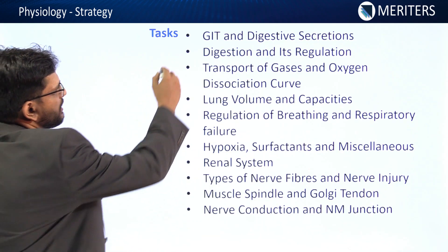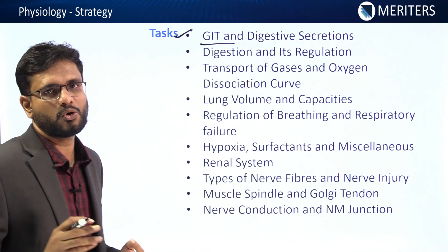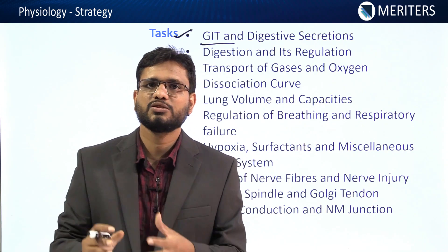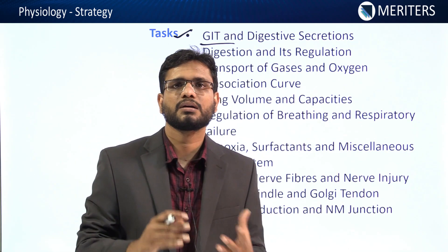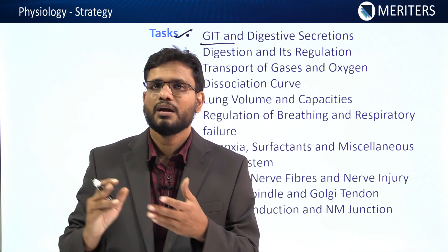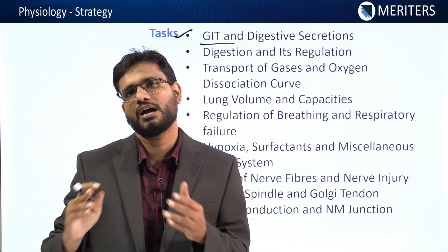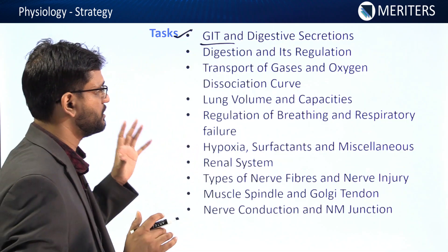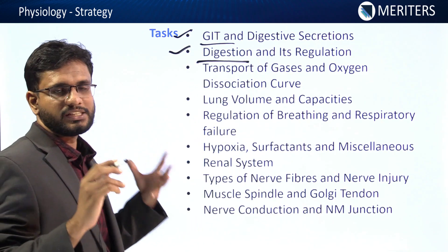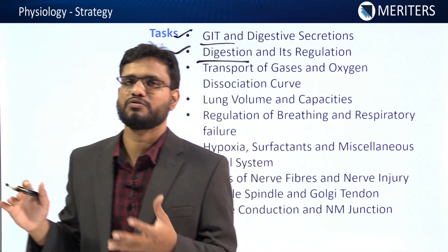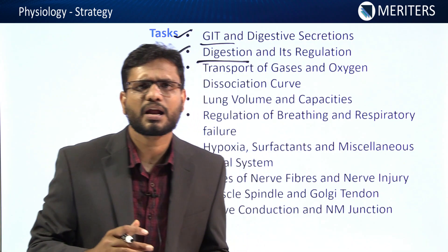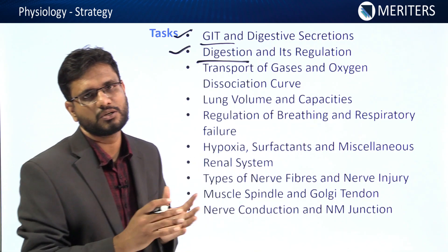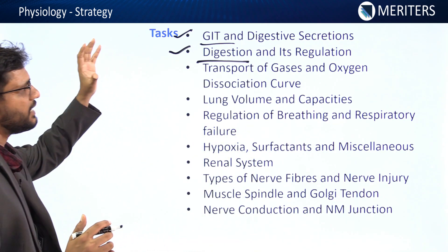The first task is GIT and digestive secretion. You should know about the different organs and parts of the GIT — oral cavity, esophagus, stomach, intestine, and important organs like pancreas and liver, their secretions, and how those secretions lead to digestion of food. You should also know digestion: where protein digestion occurs, where starch digestion starts, where lipid digestion starts, which enzymes digest which type of food.